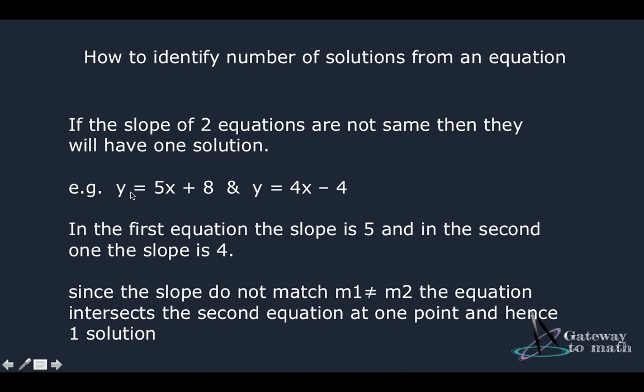So let's consider this example: y equals 5x plus 8 and y equals 4x minus 5. So both the equations are in the standard form, right? First things first, whenever you have an equation, just check if it's in the standard form. How do you check it? So y equals mx plus c. There shouldn't be any coefficient in front of y. That's when the equation is in the standard form. Now just have a look at this equation: y equals 5x plus 8 and y equals 4x minus 4. So y just have coefficient 1, so it's in the standard form.